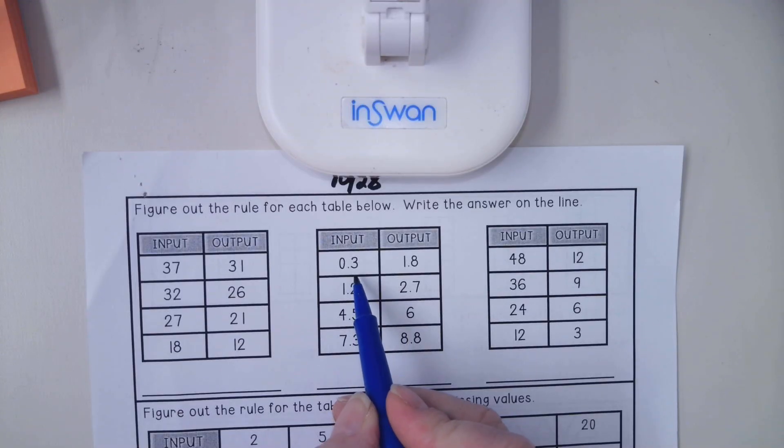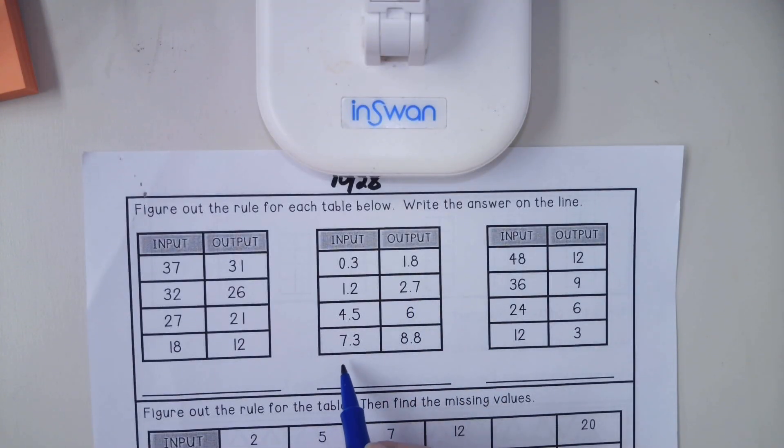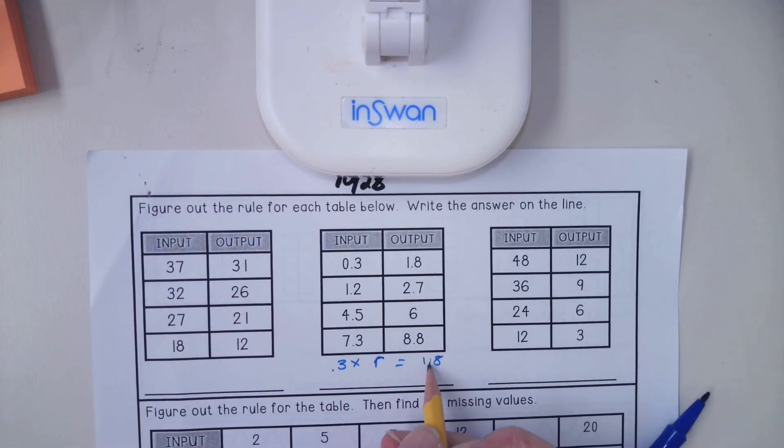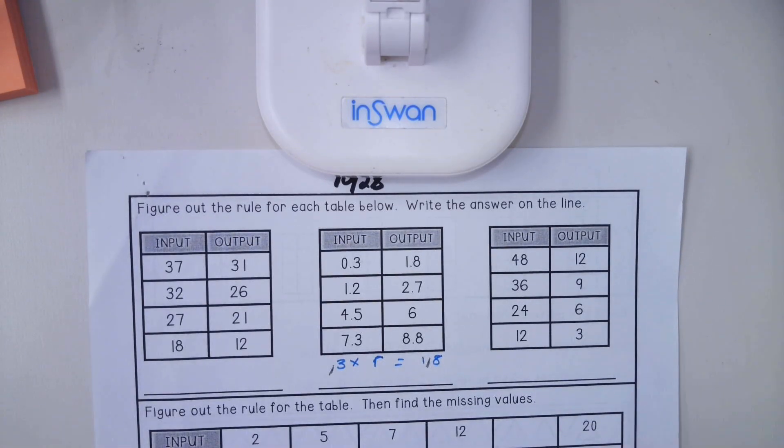If 3 goes in and 1.8 comes out, we have our input, which is 3, and our output, which is 1.8. The number we're missing is, let's do r as our variable. 3 times what gets us 1.8? Think about it without the decimal points. Pretend I've crossed this off and this off. 3 times what gets me 18? 3 times 6, let's see if that works for the next one or if we are doing something different.